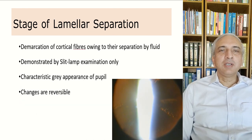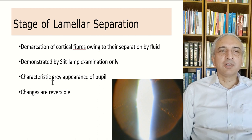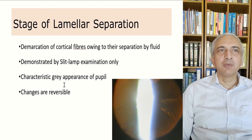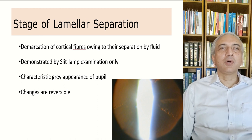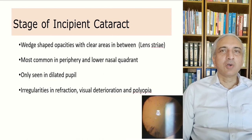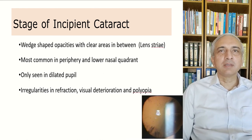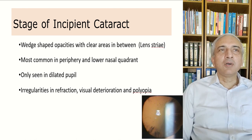The first stage — lamellar separation — is the demarcation of cortical fibers owing to their separation by fluid. It is demonstrated on slit lamp as a characteristic grayish appearance of the pupil, and the changes are reversible in the initial stages. You can see water clefts in the cortex, not involving the nucleus.